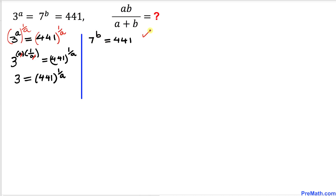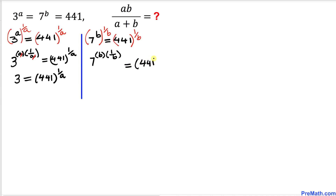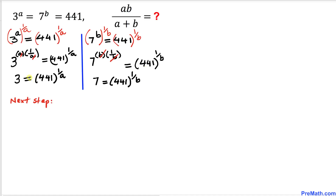Now focusing on 7^b = 441, I want to isolate 7 by itself, so likewise I take the power 1/b on both sides. The left side becomes 7^(b × 1/b), and since b and b cancel, we simply get 7 = 441^(1/b).